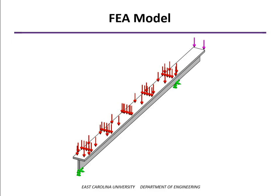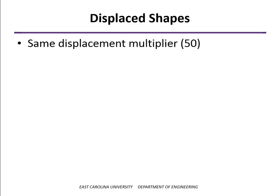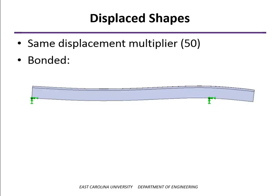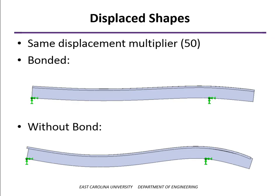This beam has been analyzed two different ways, and we'll show the deflected shapes with displacements multiplied by a factor of 50 so they can be seen more easily. If we treat this as one cross-section — assuming the bond holds well — we get a deflected shape that looks like this. But if the bond breaks, we can change the analysis so that there's contact pressure between the two parts without bonding, allowing them to slip relative to each other. The displacements and stresses are much greater when the two boards don't act together as a unit.